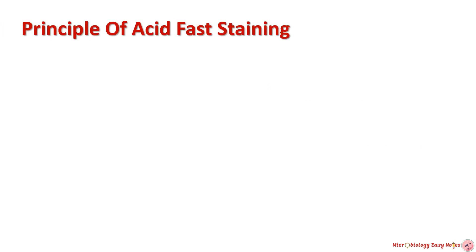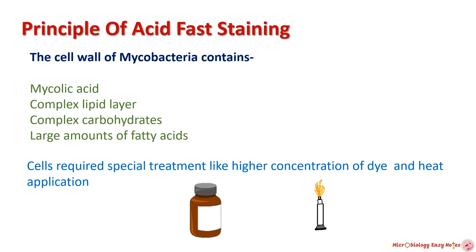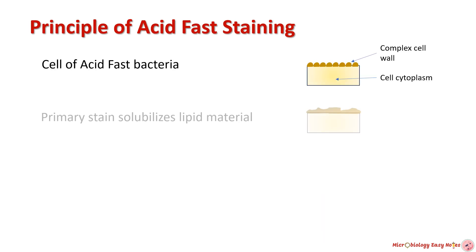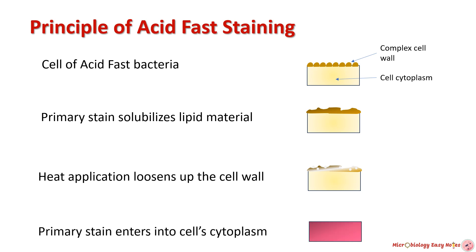Principle of acid fast staining: the cell wall of mycobacteria or acid fast bacteria contains mycolic acid, multiple layers of lipids, complex carbohydrates, and a large amount of fatty acids. All these materials make mycobacterial cells so complex that simple stain or gram stain cannot enter into the cell wall. So these cells require special treatment like higher concentration of dye and heat application so that the stain can enter. The primary stain solubilizes lipid material, and heat application further loosens the cell wall and helps the primary stain penetrate through the lipid layer, allowing the stain to enter into the cytoplasm.